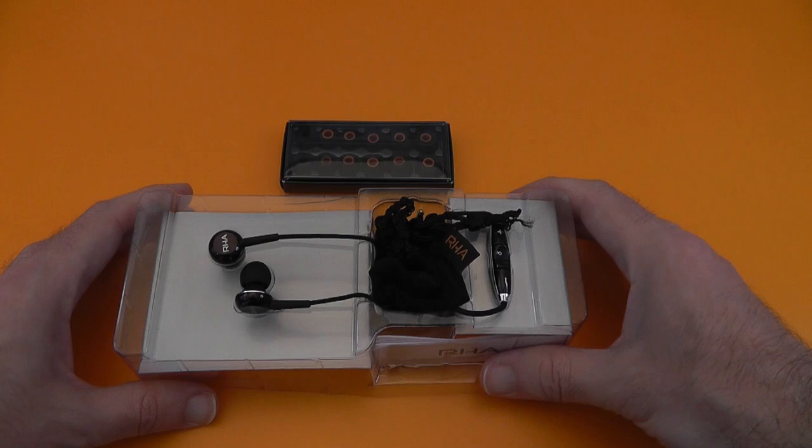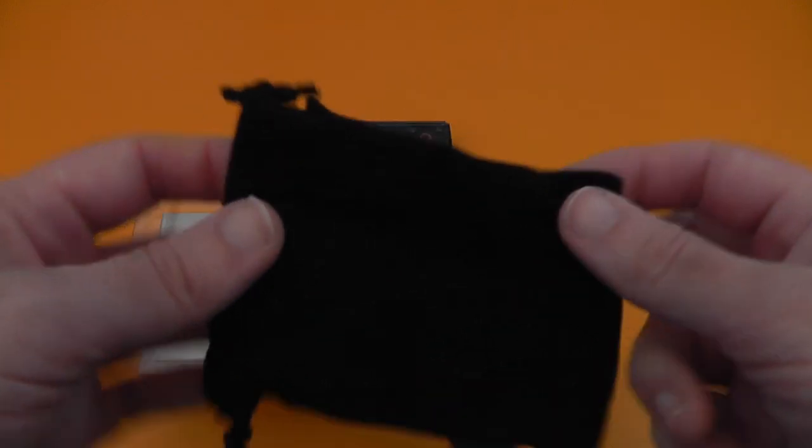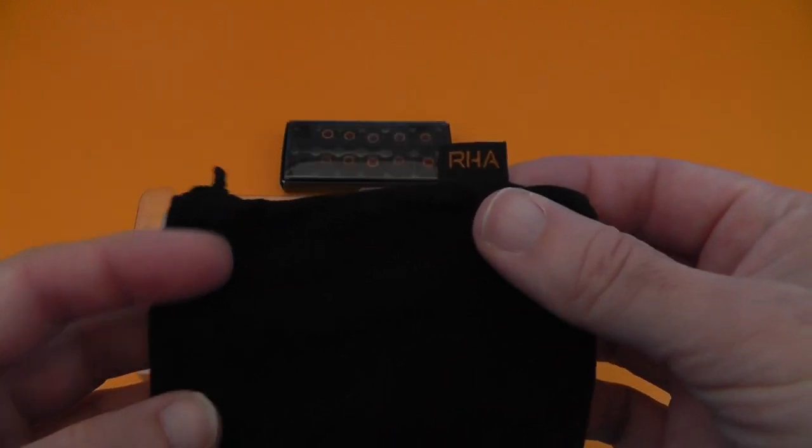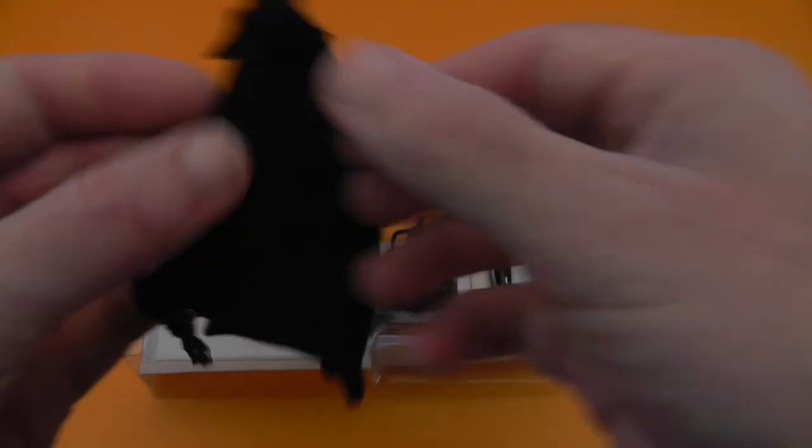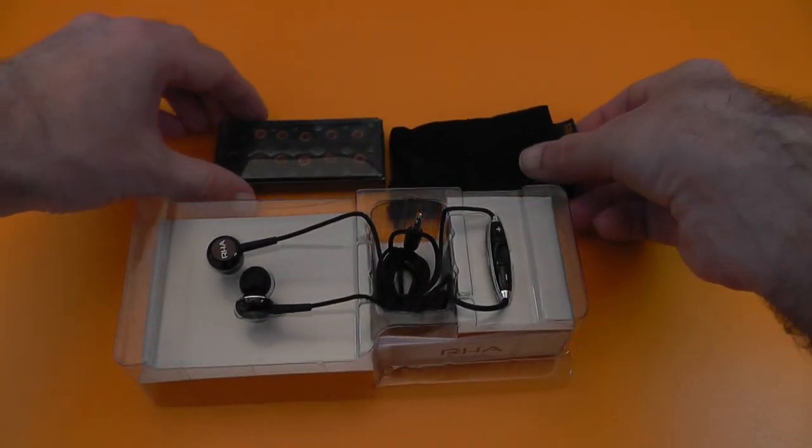So we get a little carry case or a little carry pouch. Just a little drawstring bag with the RHA logo sewn onto a tag here. Nothing special but nice that you get something to carry around your earphones.